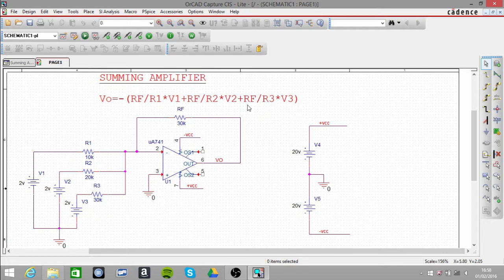And then we have RF over R3, which gives us a gain of 1, and that's multiplied by our third input voltage, which is 2V. And that gives us a voltage of 2V.